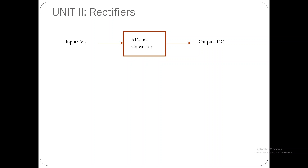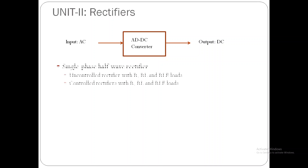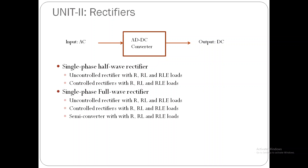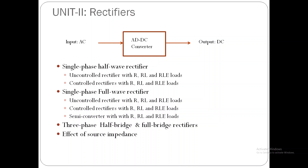In Unit 2, we shall discuss rectifiers, which are AC to DC converters. We shall cover single-phase half-wave rectifiers — both controlled and uncontrolled — with R-load, RL-load, and RLE-load. Then single-phase full-wave rectifiers: uncontrolled, controlled, and semi-controlled types with various loads. We shall also discuss three-phase half-bridge and full-bridge rectifiers with R-load, the effect of source impedance on the performance of AC to DC converters, and conclude with the dual converter.